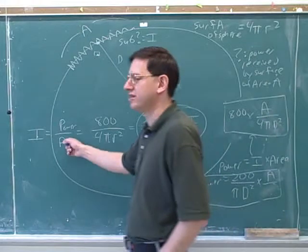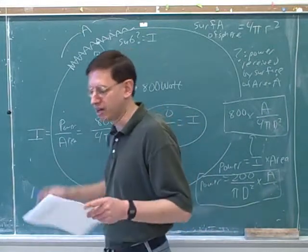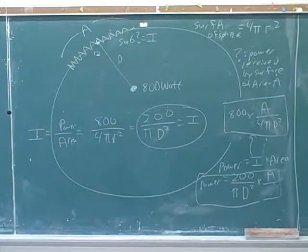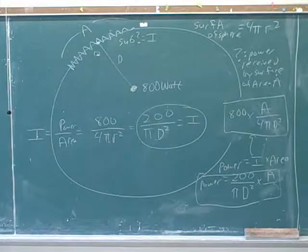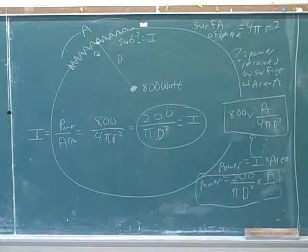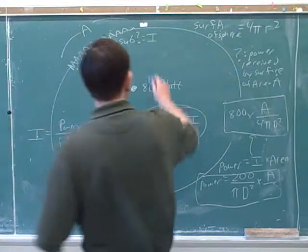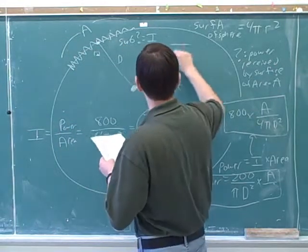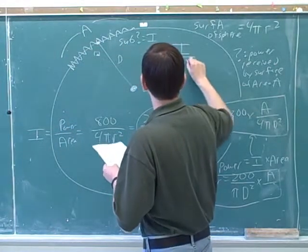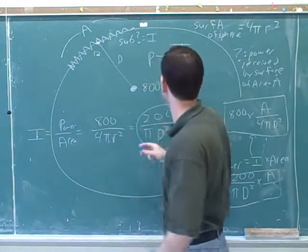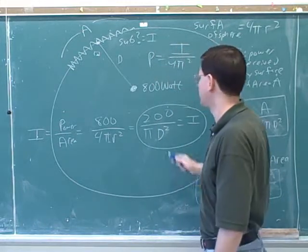The wavefronts from a point source form spheres — otherwise we wouldn't know what area to plug in. If you look at the front cover, he actually gave you this formula here. This is already optimized for a point source. So in the book, this is the formula: power is intensity over 4π r squared.